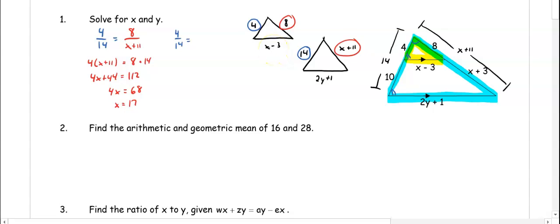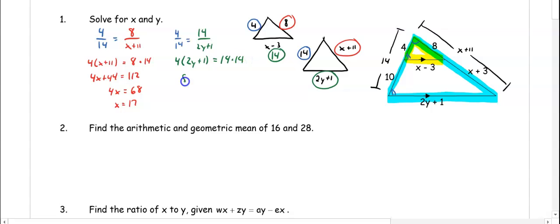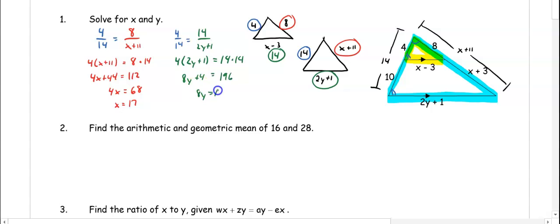Now we can use that 17 into the x side to get that 17 minus 3 is 14. So 14 and the 2y plus 1 are corresponding sides. When we cross multiply, 4 times (2y plus 1) equals 14 times 14, so we get 8y plus 4 equals 196. We subtract 4 from both sides to get 8y equals 192, and dividing by 8 gives us y equals 24.